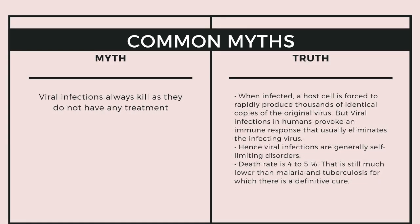Another common myth is that viral infections always kill, as they do not have any treatment. The truth is that when infected, a host cell is forced to rapidly produce thousands of identical copies of the original virus. But viral infections in humans provoke an immune response that usually eliminates the infecting virus. Hence viral infections are generally self-limiting disorders. The death rate is 4–5%, which is still much lower than malaria and tuberculosis — disorders for which there is a definitive cure.